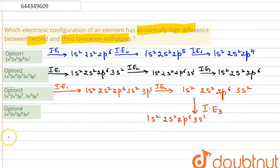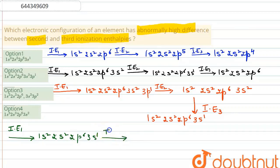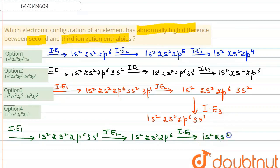For option number 4: the first ionization enthalpy gives 1s2, 2s2, 2p6, 3s1. The second ionization enthalpy gives 1s2, 2s2, 2p6. And the third ionization enthalpy will be 1s2, 2s2, 2p5. We have now written down all the ionization enthalpies and we have to compare the difference between the second and third for all options.